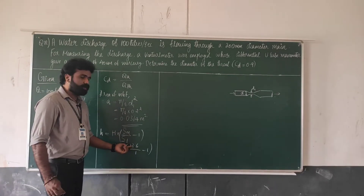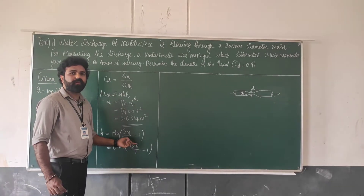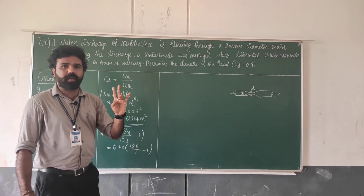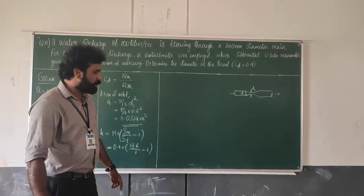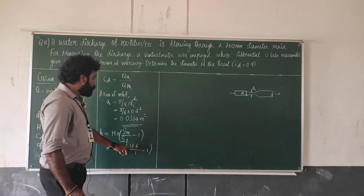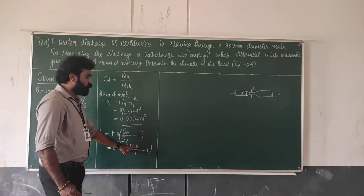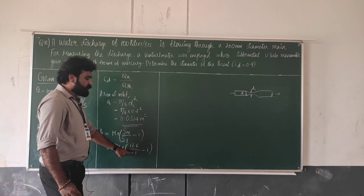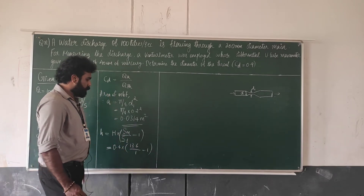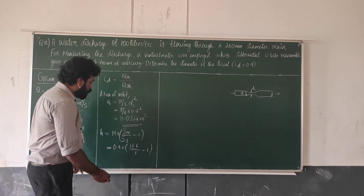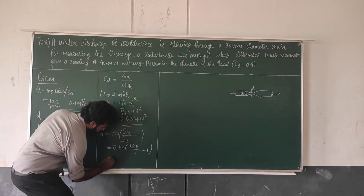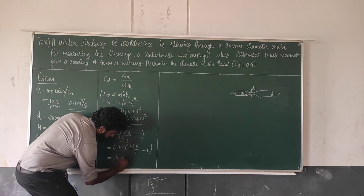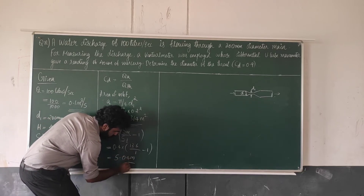Specific gravity of mercury is 13.6 and specific gravity of water is 1. So H is equal to 0.4 into 12.6, which gives H equal to 5.04 meters.